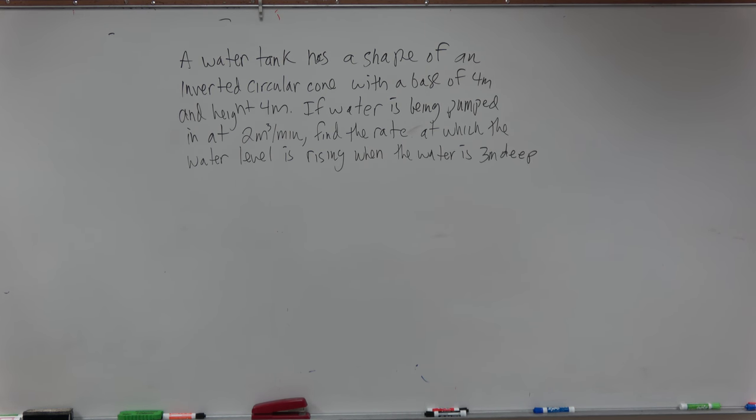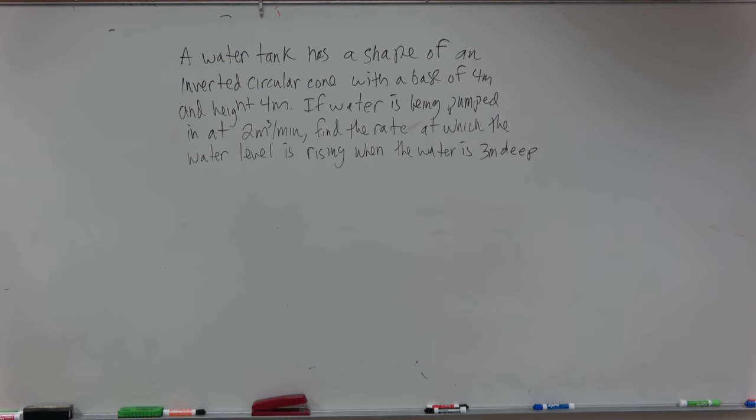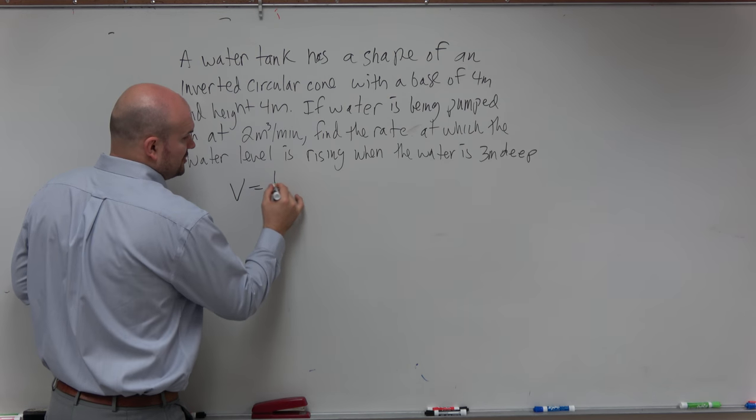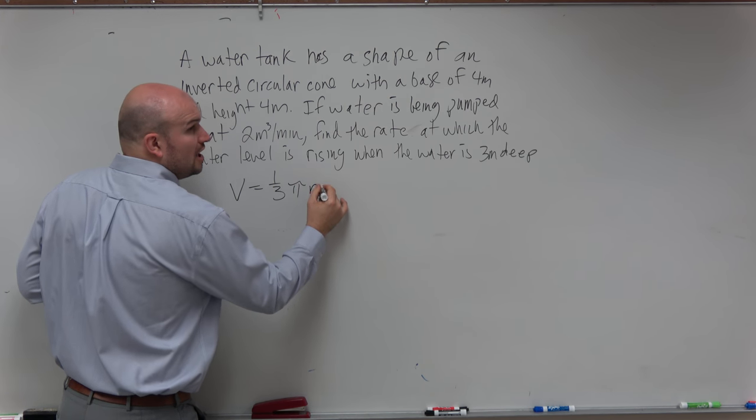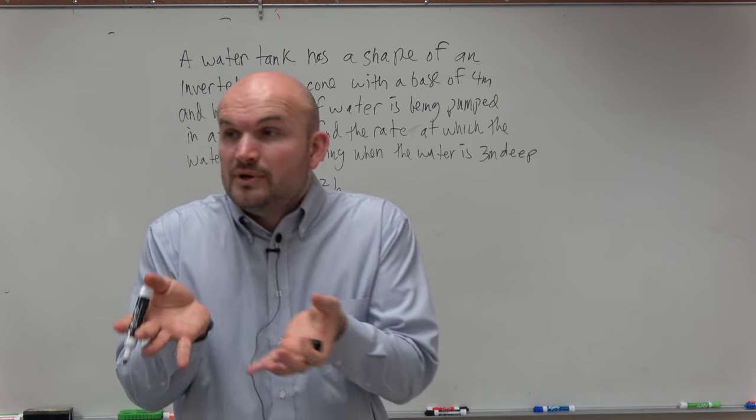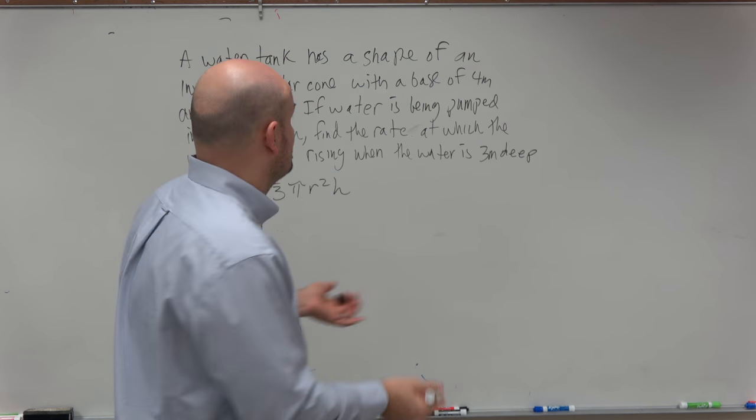The reason why it's tricky, ladies and gentlemen, is we know that we have a right circular cone. So we know that we're going to be dealing with the volume equal to one-third pi r squared h. And we know that we have a couple of rates.